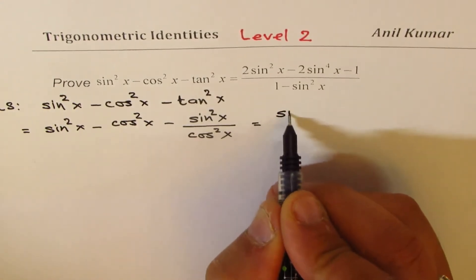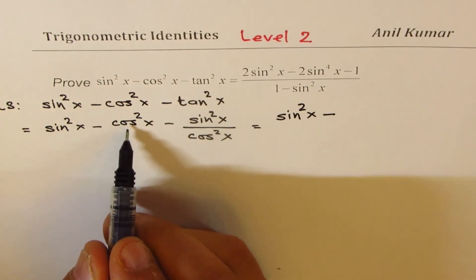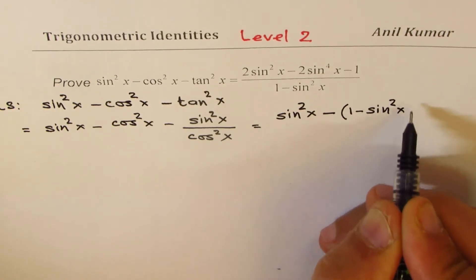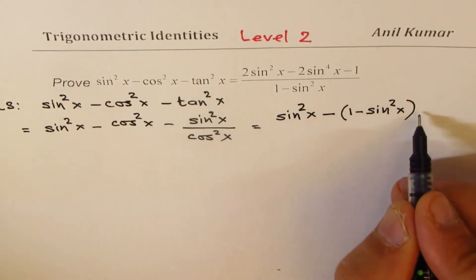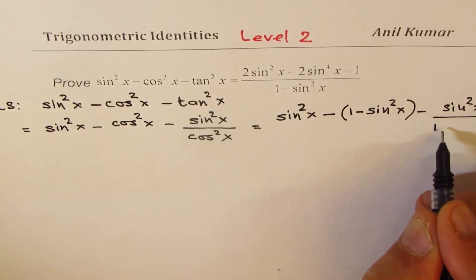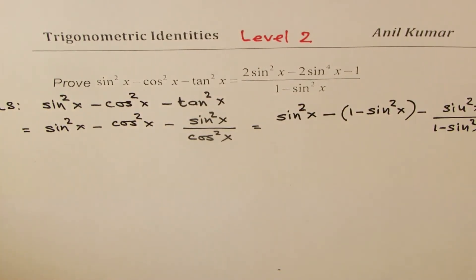So we get sin² x minus cos² x can be written as 1 - sin² x, right? And we have here sin² x divided by cos² x as 1 - sin² x.